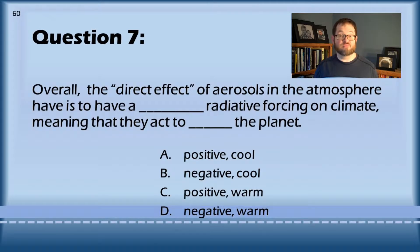Meaning that they overall reflect more radiation away from the planet, which is acting to cool the planet. That is therefore negative and cool, B.